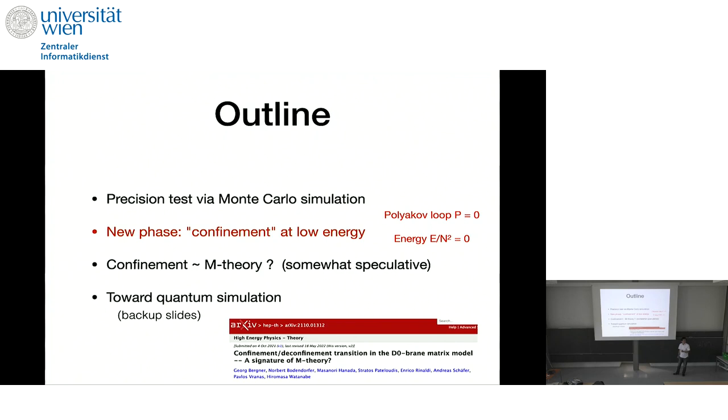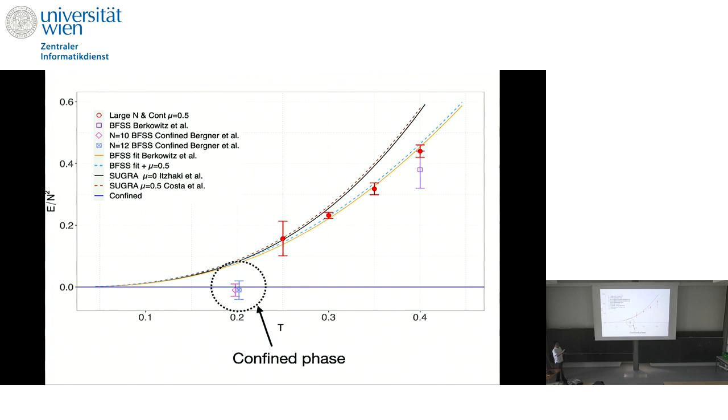In our case, we collect like 10,000 configuration, and we just fluctuate, it just fluctuate around some mean value. But if a fuzzy sphere appeared, then you would see this kind of jump. We didn't see. More precisely, we saw such a jump, but we didn't study that. We didn't include such configuration.